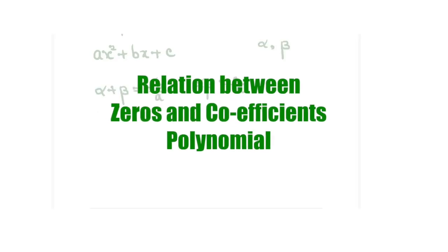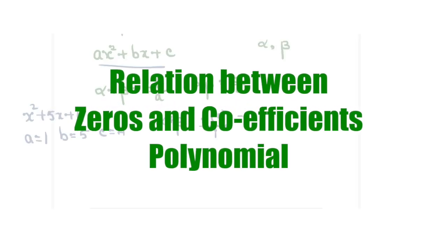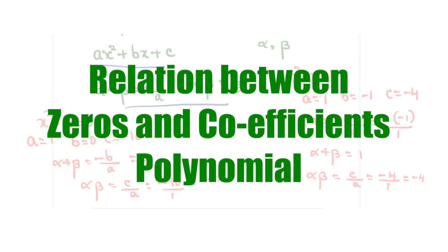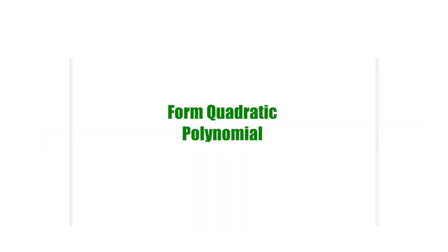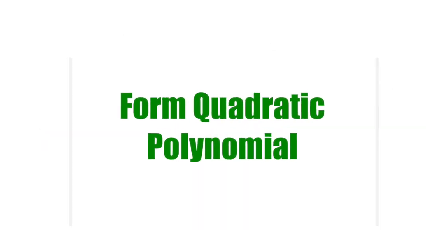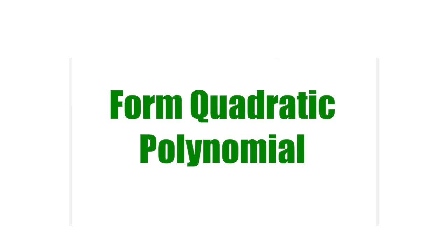In the previous video we saw how to generate alpha plus beta and alpha beta values from a quadratic equation. In this video we will reverse the process and see how to form a quadratic polynomial given alpha plus beta and alpha beta values.